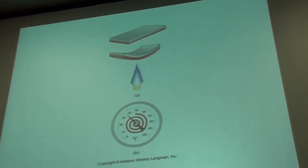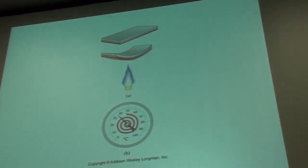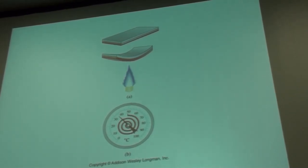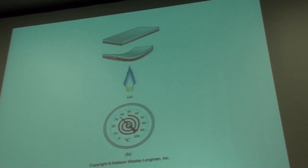I wanted to show you a couple of illustrative pictures for the principles that we've looked at so far. Here are a couple of applications. For thermal expansion, here we've got two dissimilar metals, and they're being heated up. Notice that if one of the metals expands more than the other, that can cause the metal to bump. If that happens, it can be used as a circuit breaker.